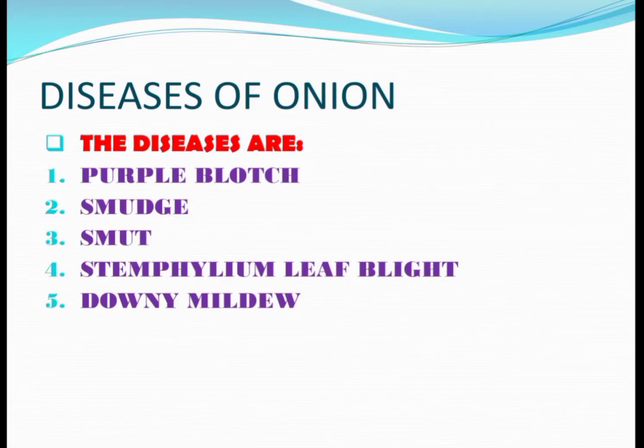The most commonly occurring diseases in onions are Purple Blush, Smudge, Smot, Stemphylium leaf blight, and Downy Mildew. Let's see them in detail.